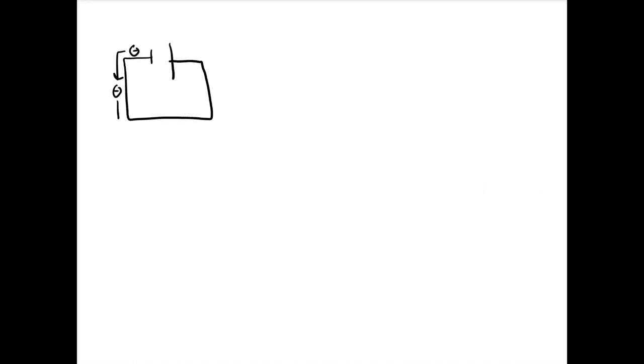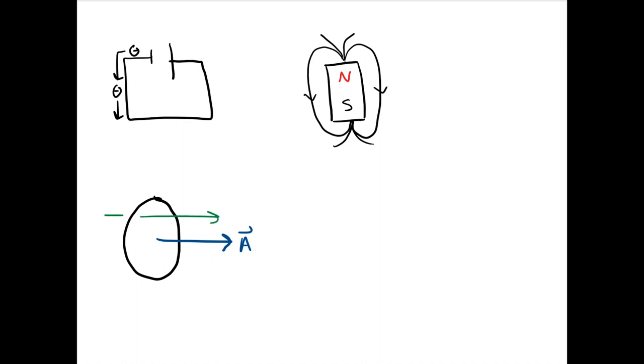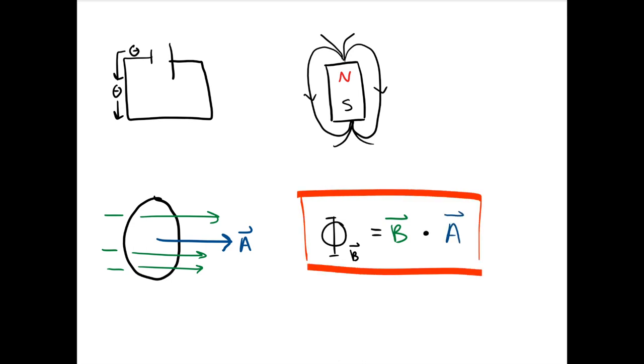Current is the flow of electric charge. Magnets create a magnetic field that form loops through the north and south ends. Magnetic flux is defined as B times A, or the amount of magnetic field through a closed loop with area A. Flux changes if either the magnetic field or area of the loop changes.